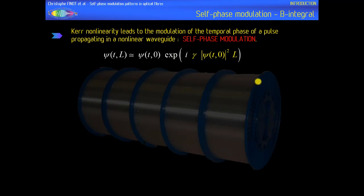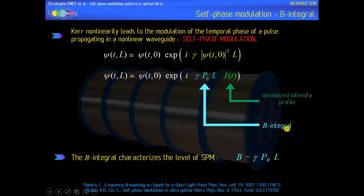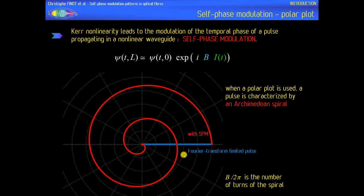This effect depends on the intensity profile of the pulse, and to better characterize it we use a normalized intensity profile with the peak power normalized to 1. The key quantity that appears is the product of gamma by the peak power and by the propagation length. This product is often referred to as the B integral, and it characterizes the maximum level of SPM — the maximum phase introduced during the nonlinear propagation.